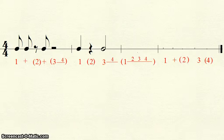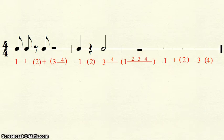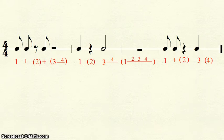The third measure is a 1 with a line, with beats 2, 3, and 4 on the line, all in parentheses — a whole rest. The last measure begins with 1 and, two eighth notes, then a single 2 in parentheses — a quarter rest — a 3 by itself, a quarter note, and a 4 in parentheses, a quarter rest.